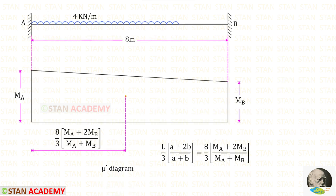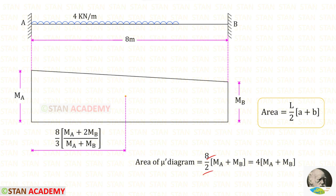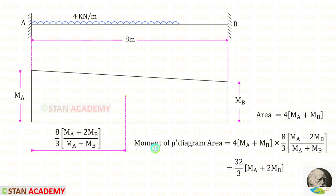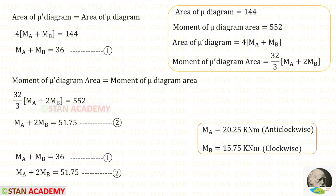Using the centroidal distance formula: L = 8, A = MA, B = MB. For the area: L = 8, A = MA, B = MB, so 8/2 = 4, giving area = 4(MA + MB). For the moment of the mu dash diagram area, we multiply the area by the centroidal distance and simplify, with 4 × 8 = 32, giving the moment of the mu dash diagram area.